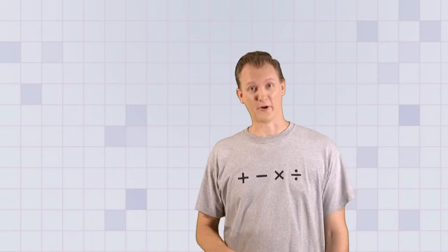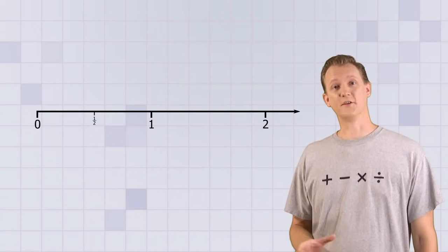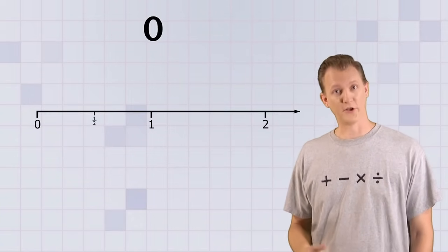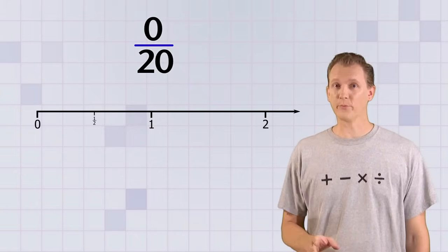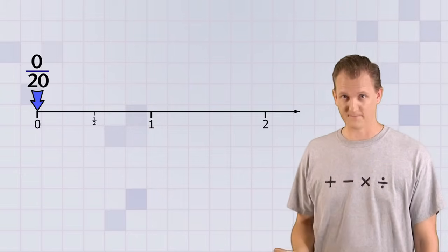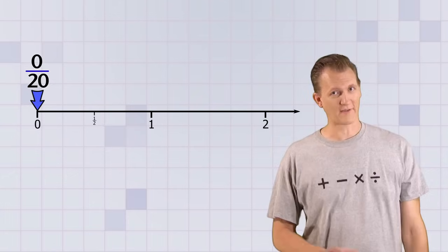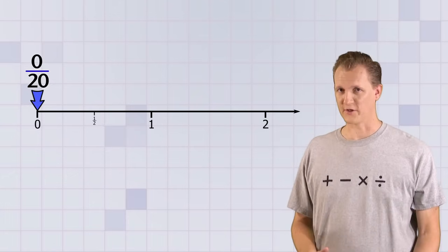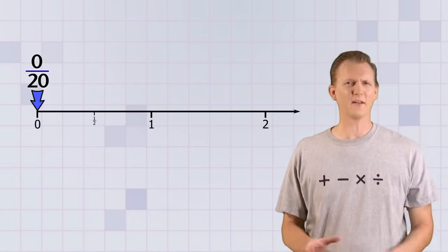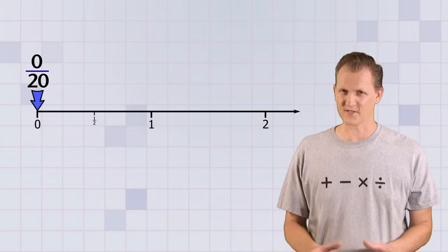Now that we know the 4 basic types of fractions and where they fit on the number line, let's learn more about how the relationship between the top and bottom numbers affects the value of a fraction. Let's go on a journey down our number line, starting with the zero fraction 0 over 20, whose value puts us at 0. To get moving, all we have to do is start changing the value of our fraction by increasing the top number, while leaving the bottom number the same the whole time.